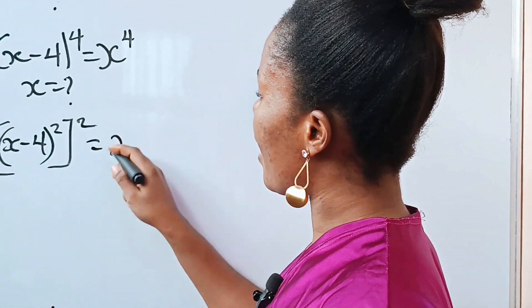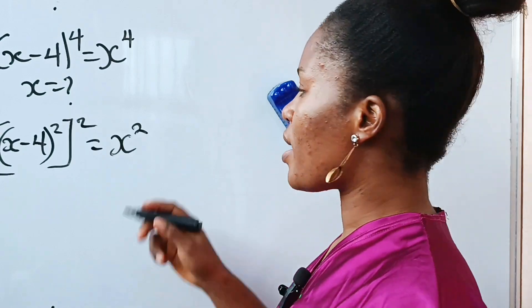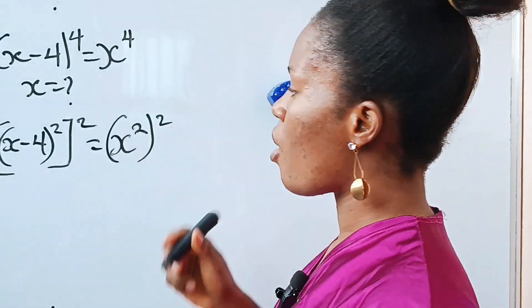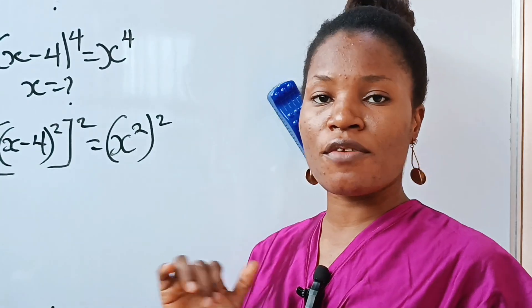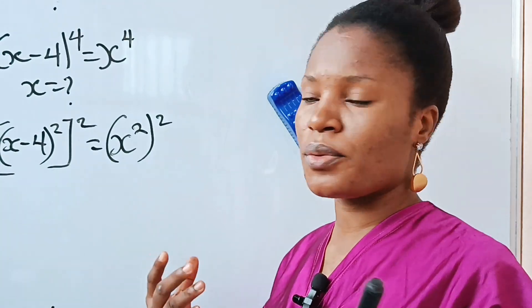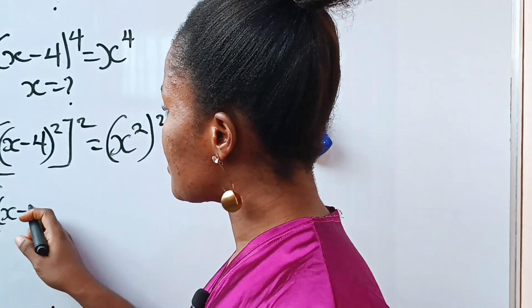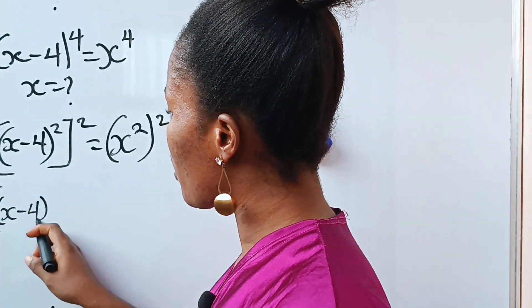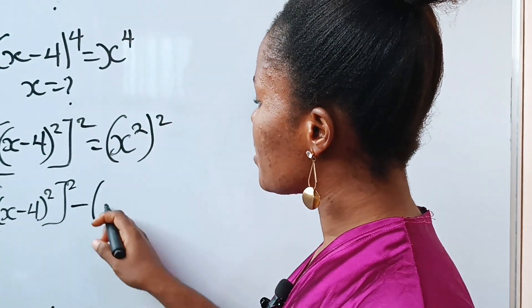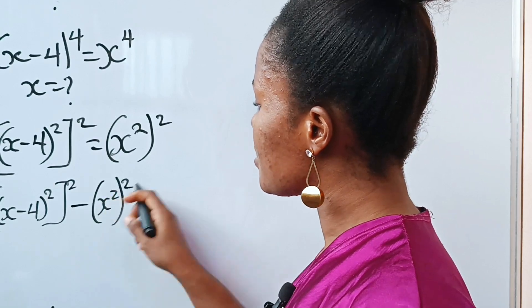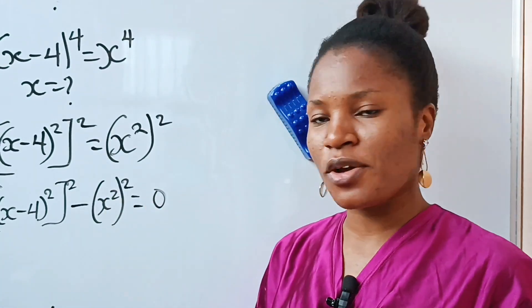And similarly, I can rewrite this side as x squared raised to the power of 2. Now let me bring this to the other side and equate everything to be equal to 0. So I'm going to have x minus 4 squared, everything squared, minus x squared squared, everything squared, is equal to 0.